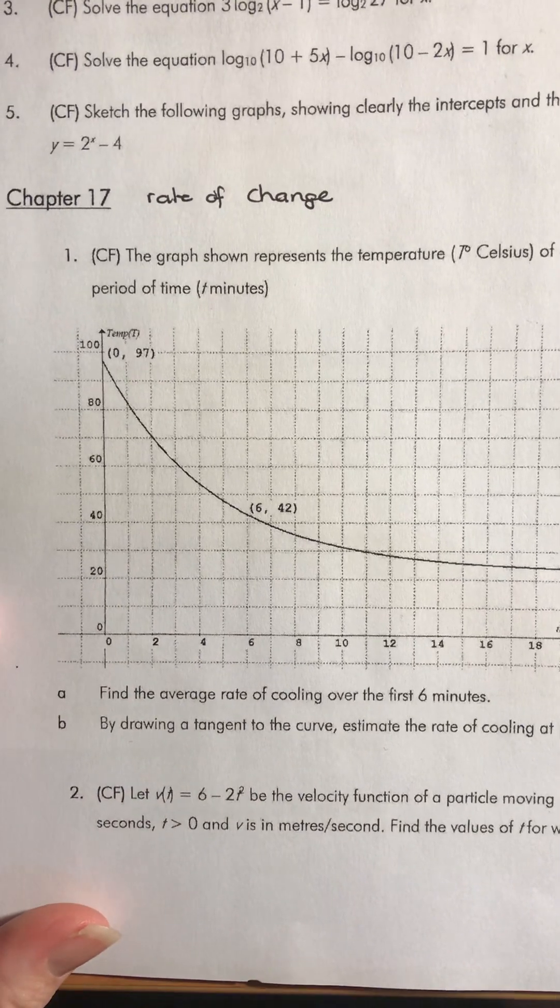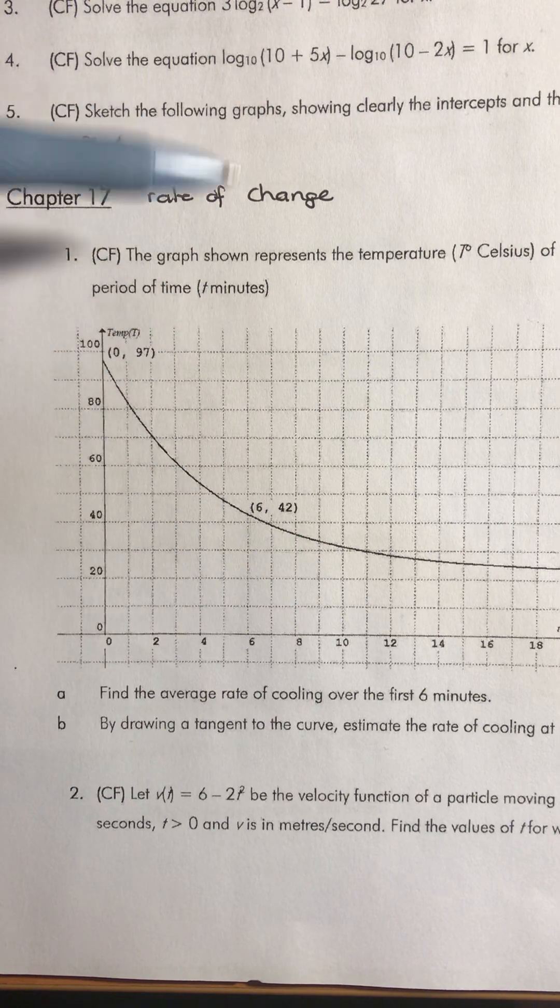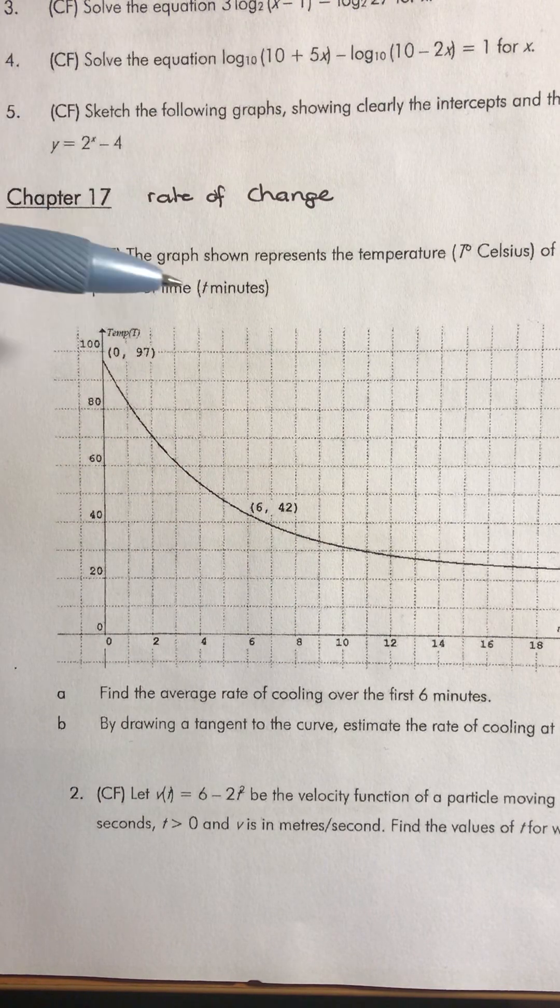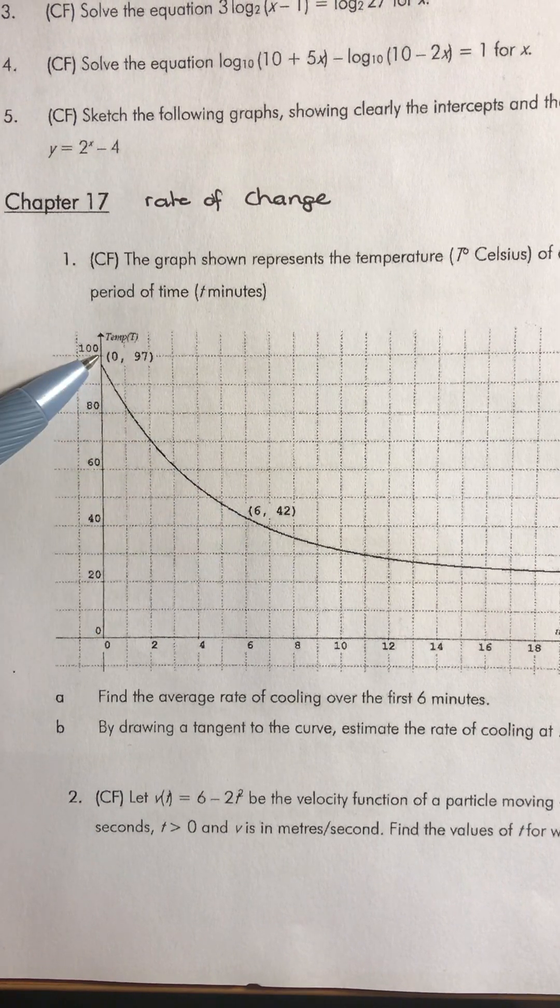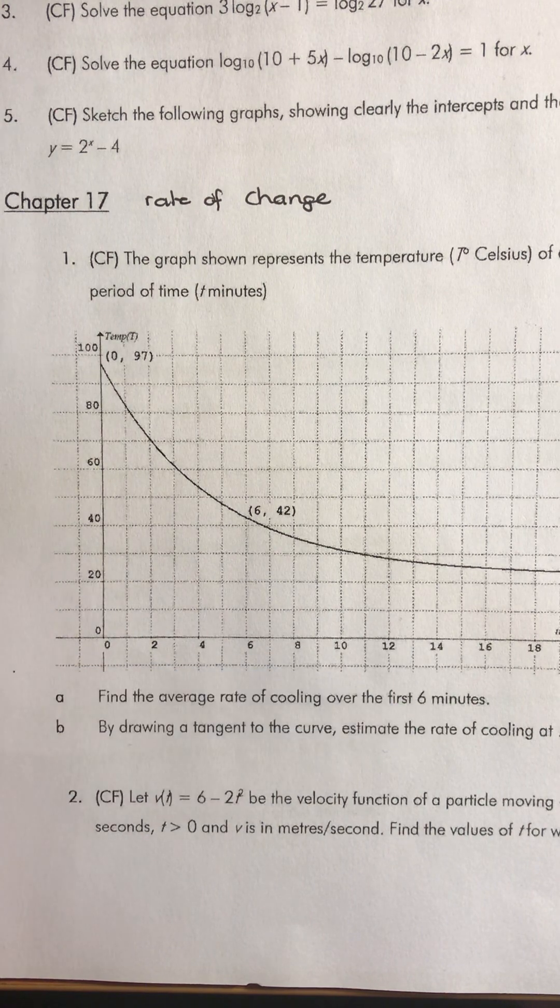Okay, having a look at a rate of change question now. We've got a graph down here that represents the temperature as a cup of coffee cools over a period of time t minutes. We've got some coordinates on our curve and we've been first asked to find the average rate of cooling over the first six minutes.